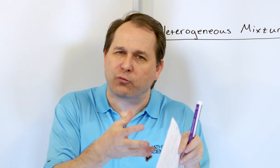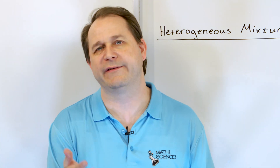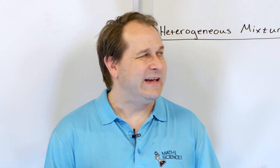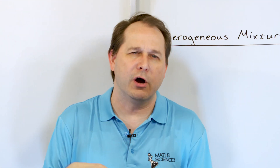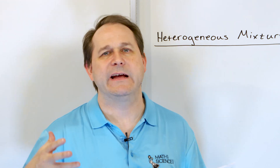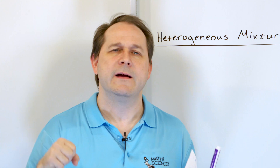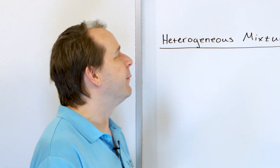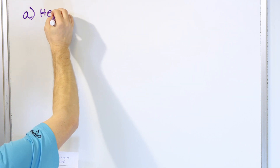Problem one: rice pudding. It's got rice, milk, and other things. Is it heterogeneous, homogeneous, or a pure substance? It can't be a pure substance. Rice pudding is not mixed in an industrial mixer to ensure it's absolutely uniform, so it's probably going to be heterogeneous — you'll have clumps of rice over here, clumps of milk, making it non-uniform. So rice pudding is heterogeneous.